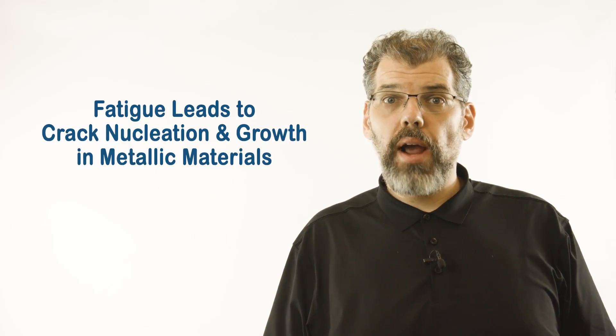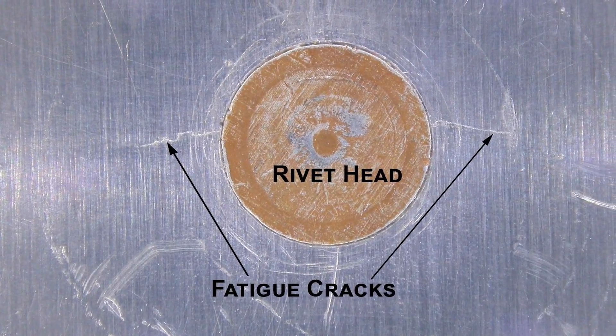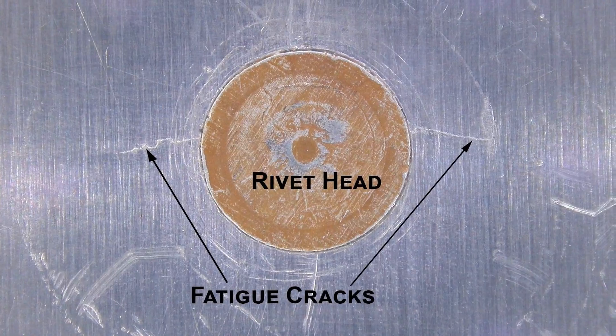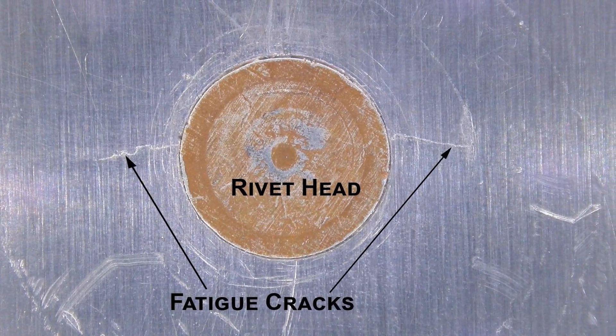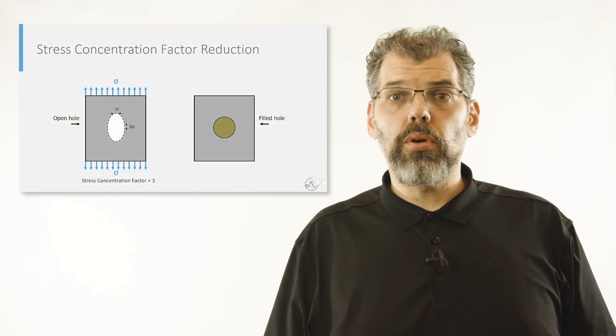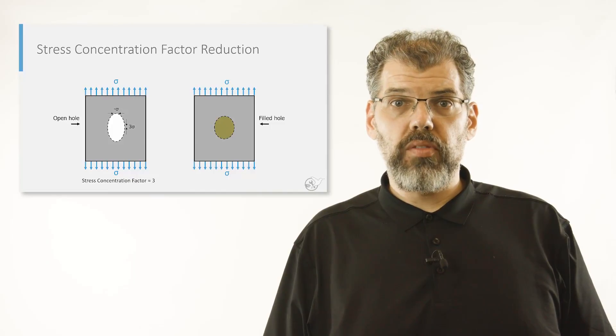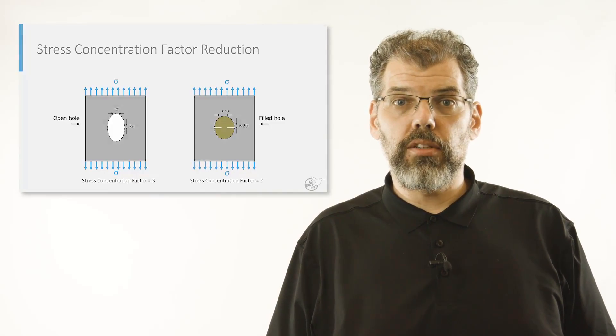If a joint is subjected to repeated loading below its static strength, it can still fail as a result of fatigue. Fatigue was extensively covered in an earlier unit, so the fact that cracks will tend to nucleate at the edges of fastener holes where stress concentration factors are high should come as no surprise. We have also already discussed how hole-filling properties of a rivet can actually help reduce these stress concentration factors.